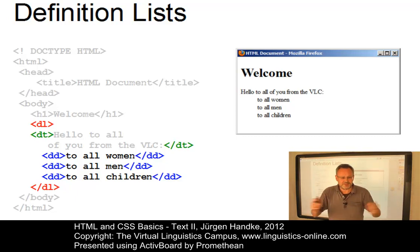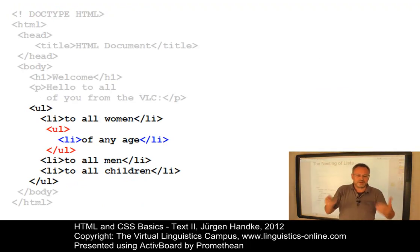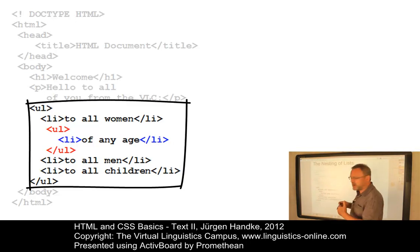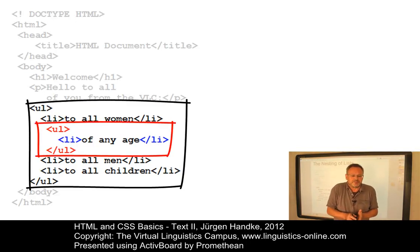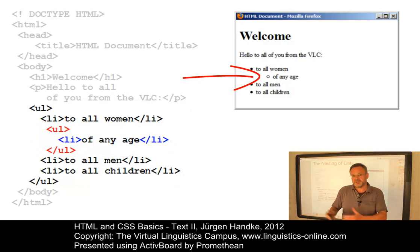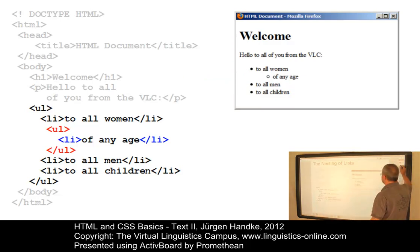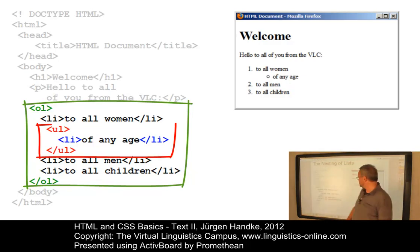Lists can be nested within one another. Here we have nested two unordered lists within one another. As a result, we get a second bullet list with a new bullet form — here, by default, an empty circle. Alternatively, you can nest different list types within one another, for example one ordered list with an unordered list inside it.